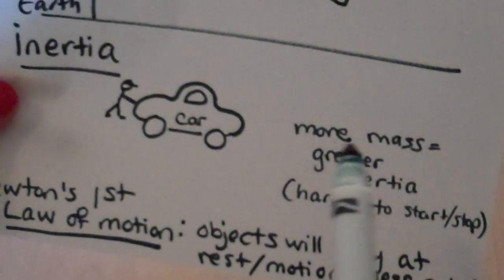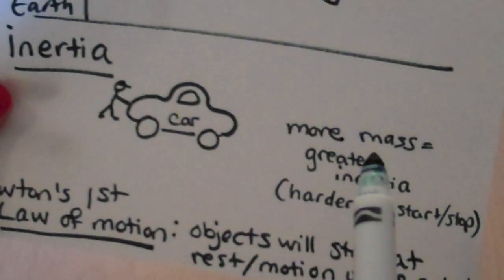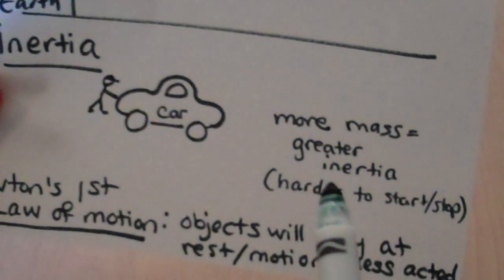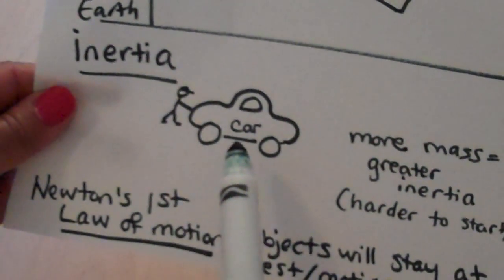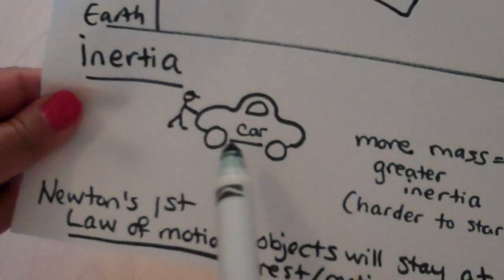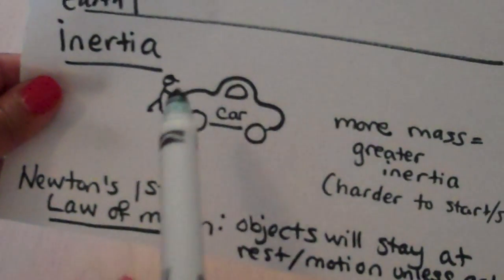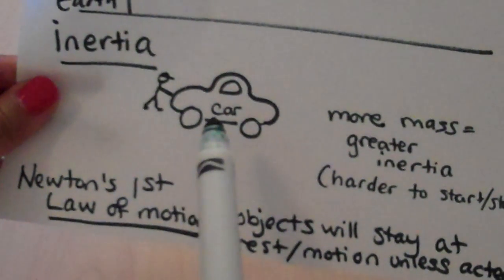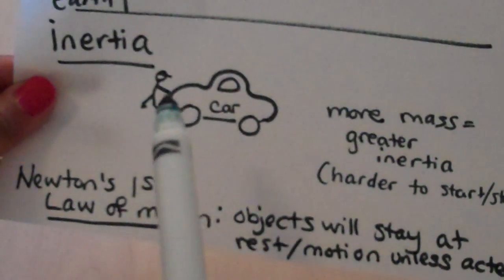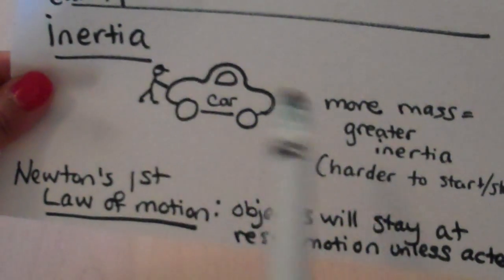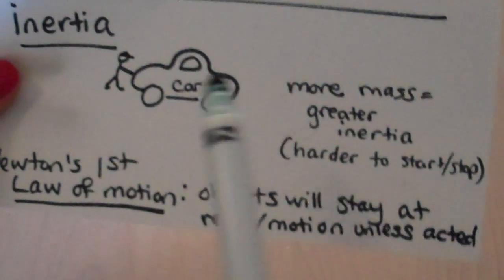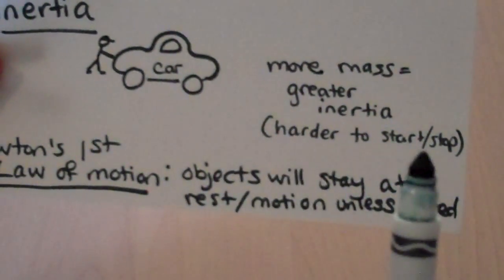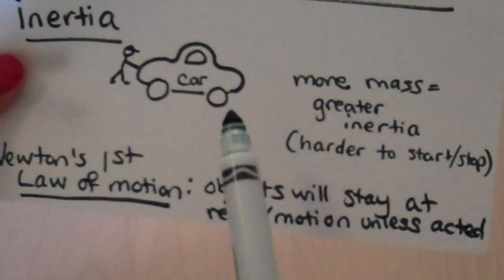Inertia is the more mass you have, the greater inertia. It's harder to start and stop. Let's say here's this guy, this car ran out of gas, he's trying to push the car. It's very hard to push this car. It's very massive. Now, if you had a little tiny toy car, that's easier to push, because it has less mass. The more mass, the greater inertia. The harder it is to start and stop that object.